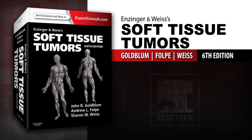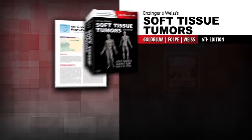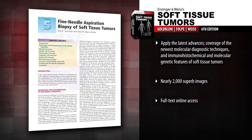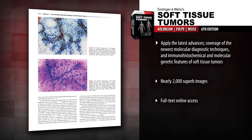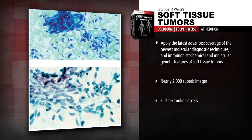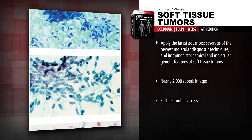Introducing Enzinger and Weiss' Soft Tissue Tumors, 6th Edition — your essential resource on the diagnosis of tumors of the skeletal muscles, connective tissue, fat, and related structures.